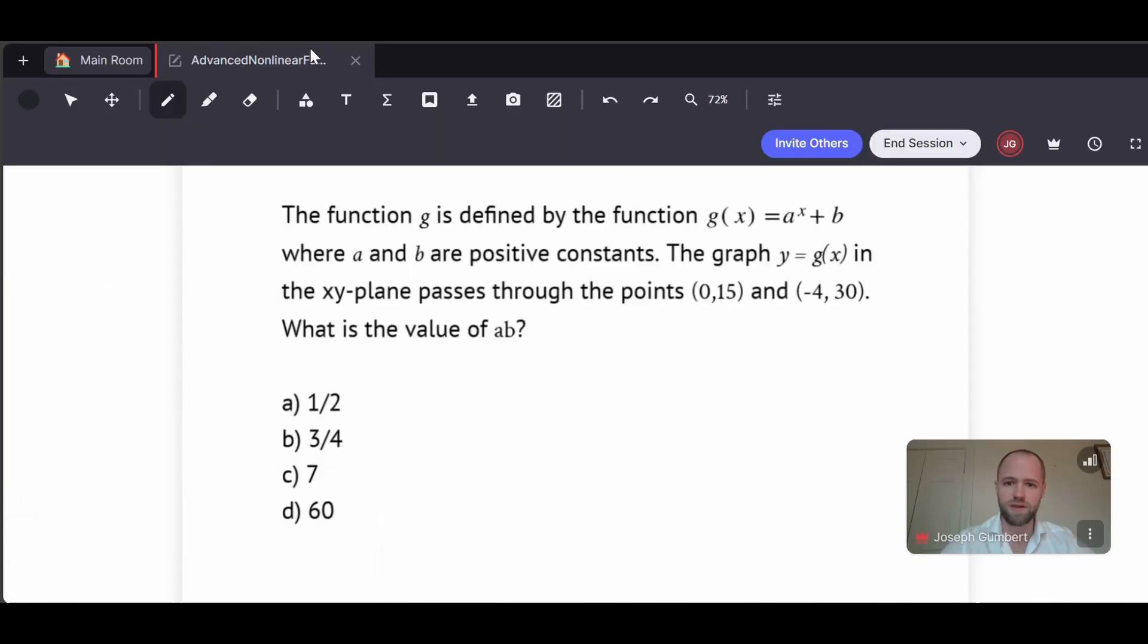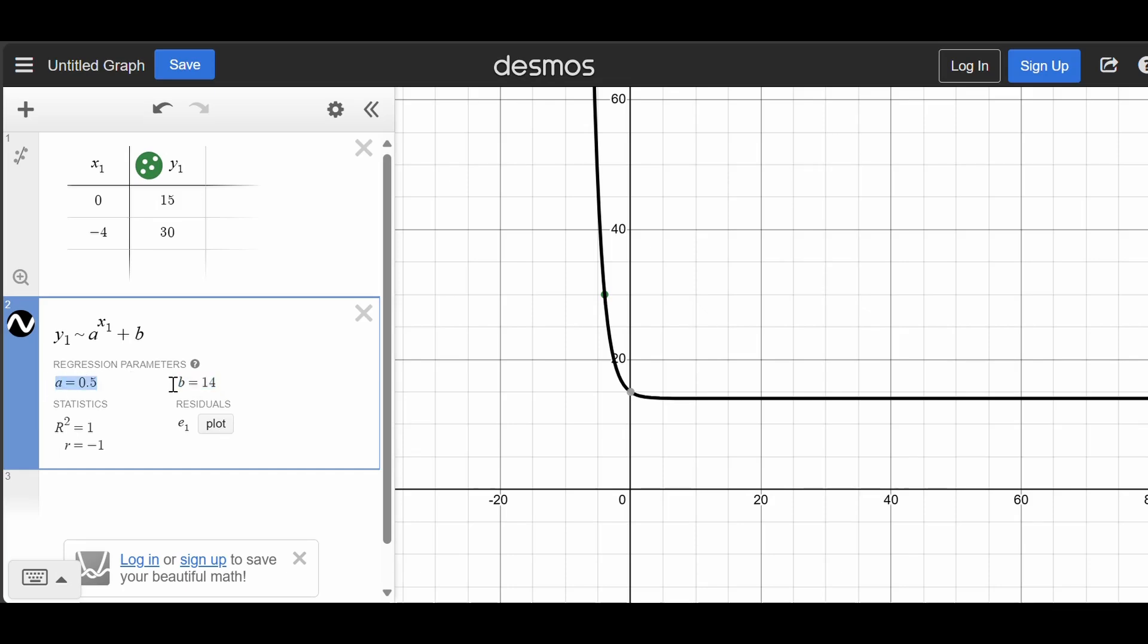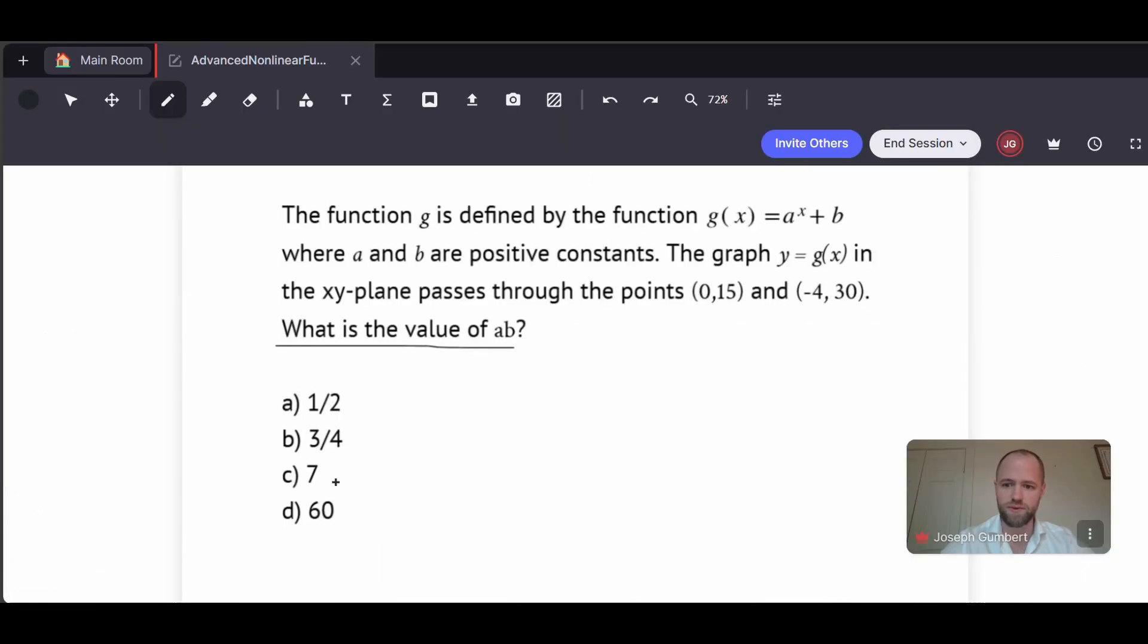So with that, they asked what is the value of a times b? And so our a was 0.5, our b was 14, and so we get 7 as the correct answer.